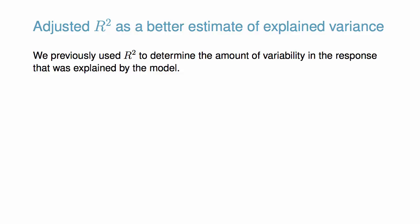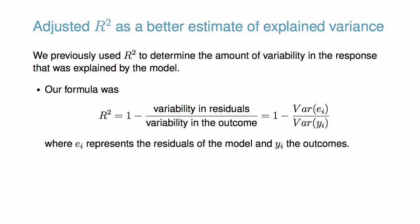We previously used R-squared to determine the amount of variability in the response that was explained by the model. Our formula was R-squared equals 1 minus the variability in the residuals divided by the variability in the outcomes. This strategy for estimating R-squared is acceptable when there is just a single variable. However, it becomes less helpful when there are many variables.